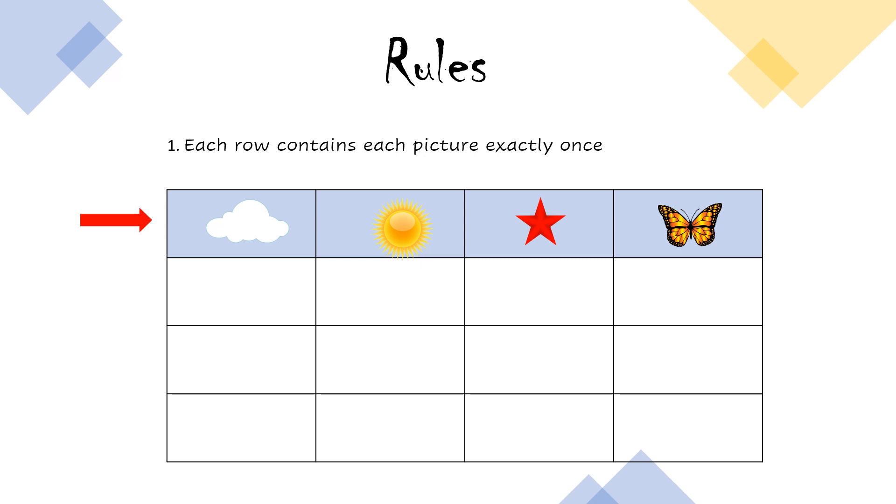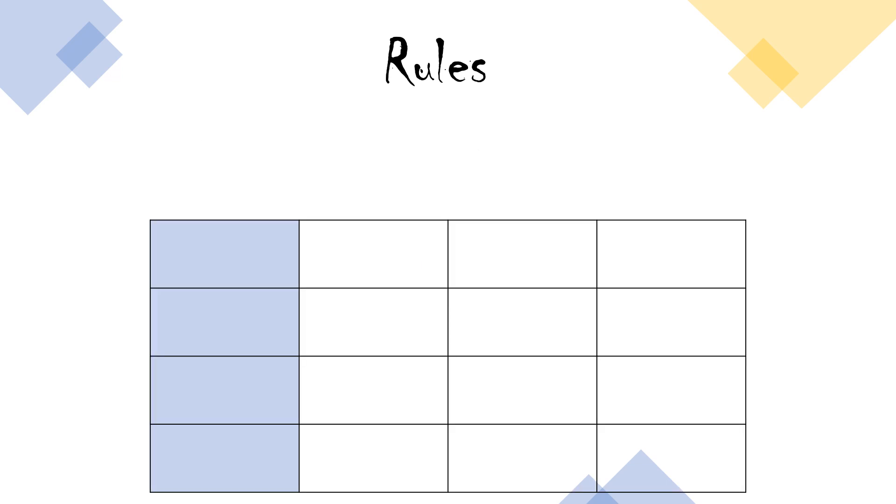The second rule says each column contains each picture exactly once. In a column, you cannot repeat the given pictures; it should be exactly once.